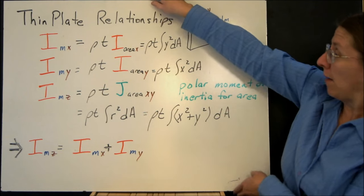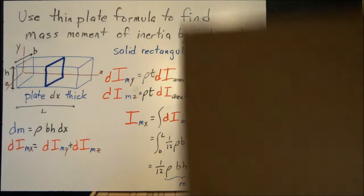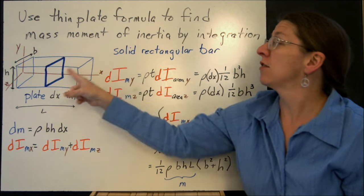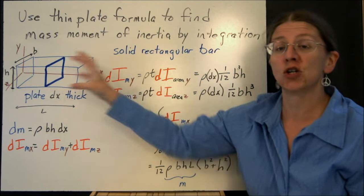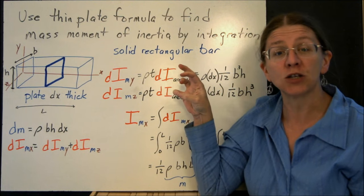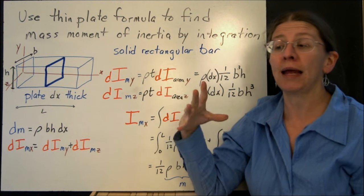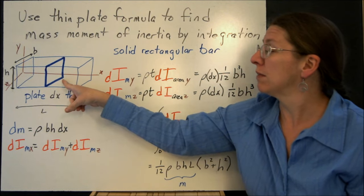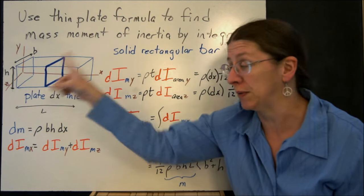And we're going to use that relationship to find the mass moment of inertia for this extruded rectangle. You can also do this for any body of revolution. When I actually want to figure out what the mass moment of inertia of the whole thing would be.